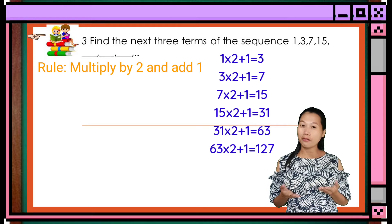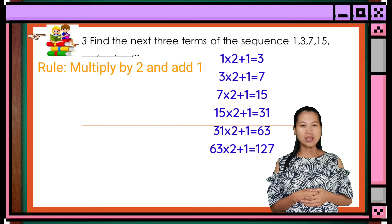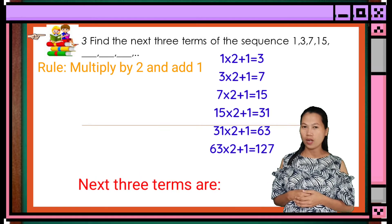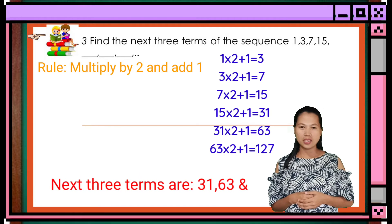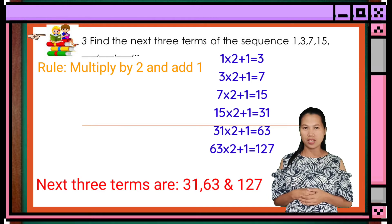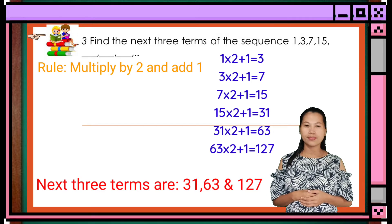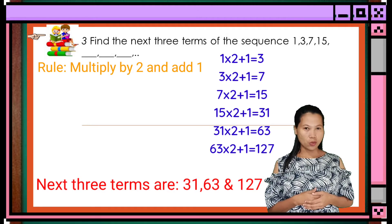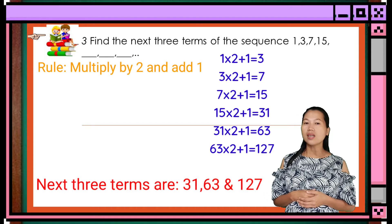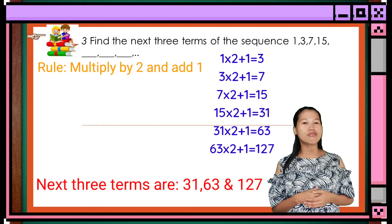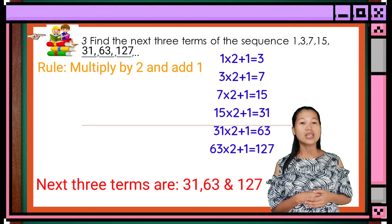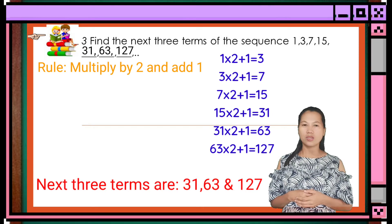Therefore, the next 3 terms of the sequence are 31, 63, and 127. The sequence is 1, 3, 7, 15, 31, 63, and 127.